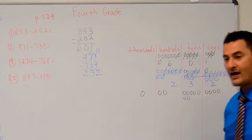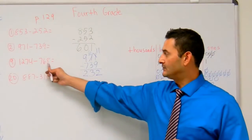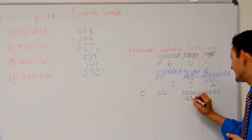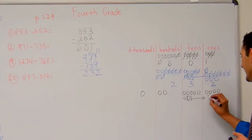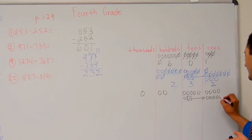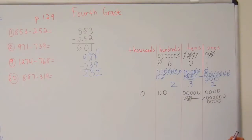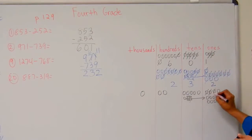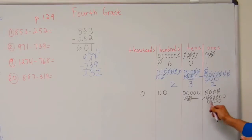Now let's subtract. Start with the ones place — I've got to take away eight. I've got four ones, I can't do that. I'm going to move this ten over to the ones place, giving me ten ones. Now I can take away eight — one through eight. How many do I have? I've got six.